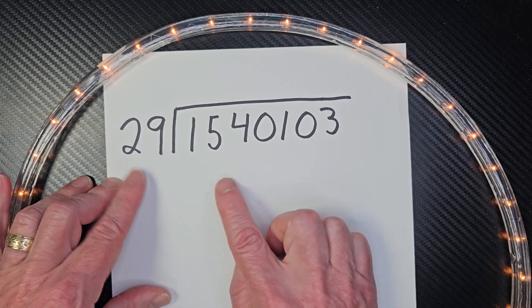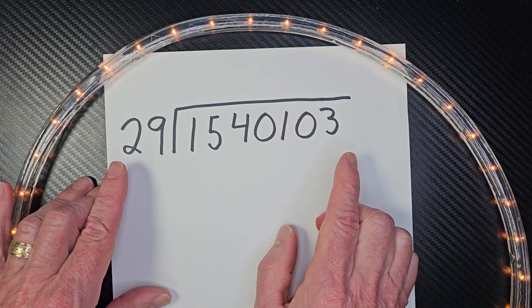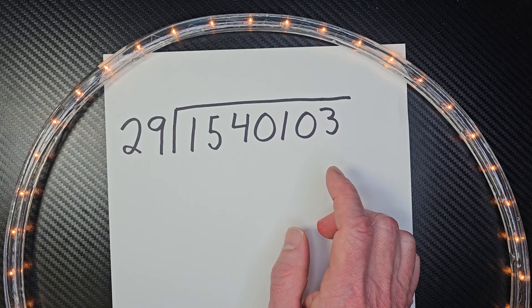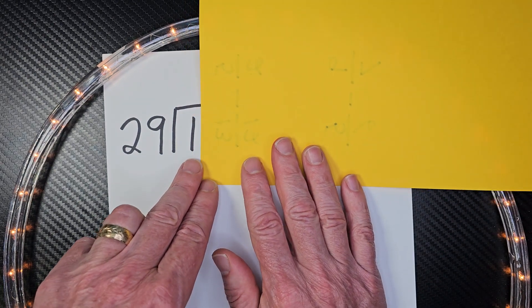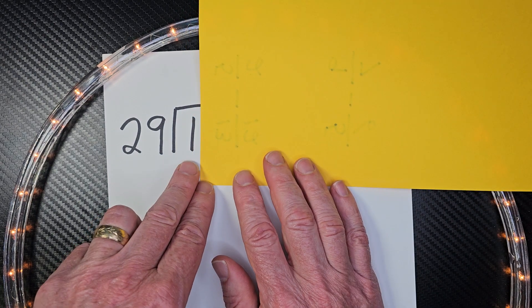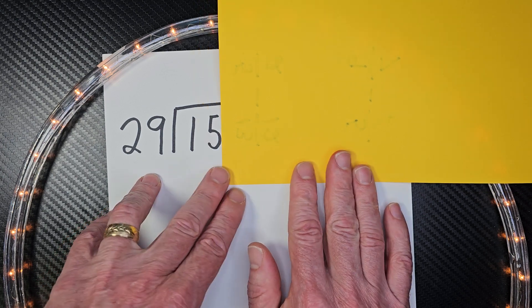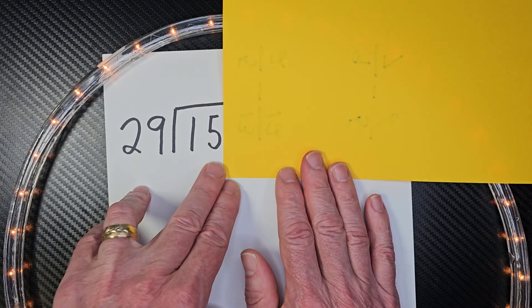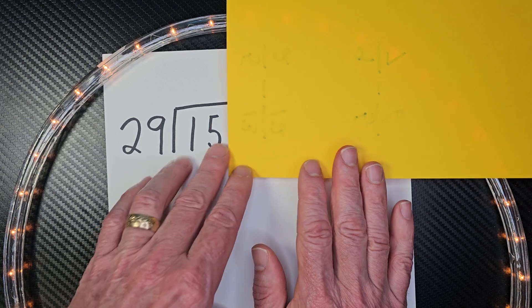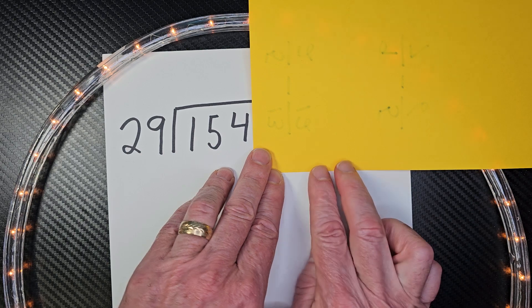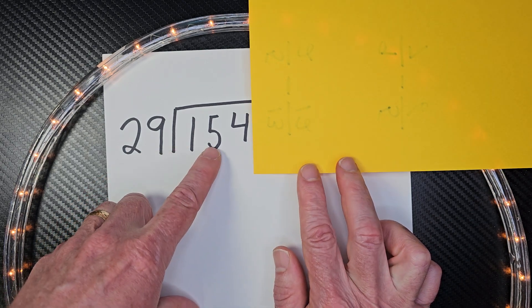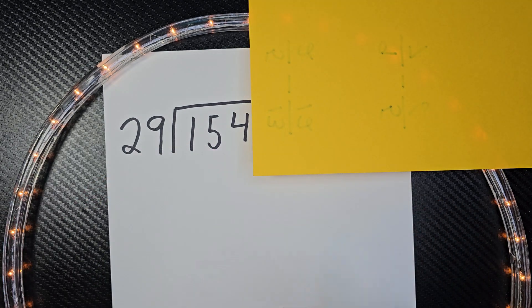How in the world can you begin with something like that? You just got to take it step by step. Cover up some numbers if you need to. So can I take 29 from the 1? You cannot. Can I take a 29 from the 15? No. Can I divide 154 by 29? Yes, you can put 29 in here, but how many times? Now here's my little trick on how I do that.